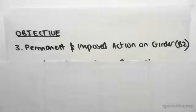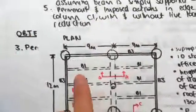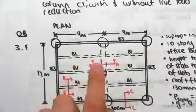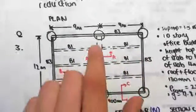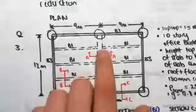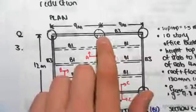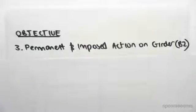The objective with this video is to find the permanent and imposed action on the girder B2. In the previous video we found the UDLs in B1, the joists. Now we're looking at finding the loading in B2, this central girder.